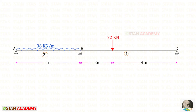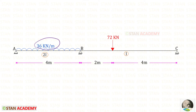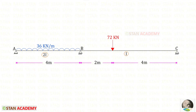In this beam there are two spans: span AB and span BC. In span AB there is a uniformly distributed load of 36 kilo-newton per meter acting over the whole span. In span BC there is a concentrated load of 72 kilo-newton acting at a distance of 2 meters from support B. Span AB is 4 meters long with moment of inertia 2I, and span BC is 6 meters long with moment of inertia I.